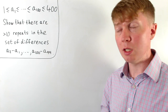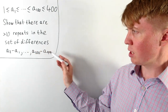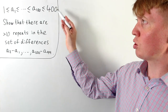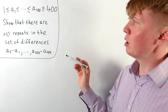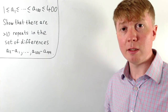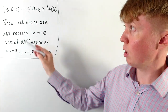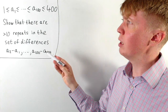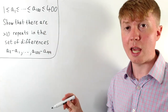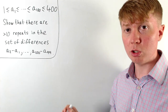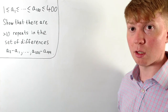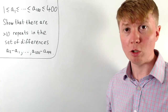There's a balance here: we don't want differences which repeat too many times, but at the same time we can't have the numbers too big. Our approach is to assume, in order to make the numbers as small as possible, that a1 equals 1. We'll try to make all differences as small as possible, and show that this still forces a100 to be bigger than 400 — a contradiction.